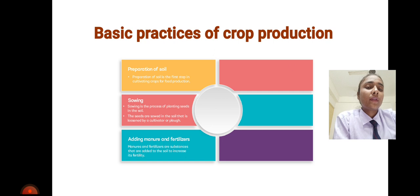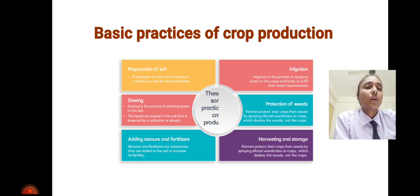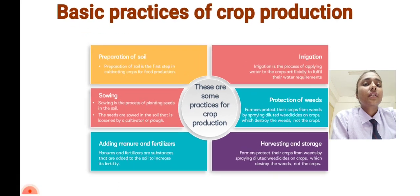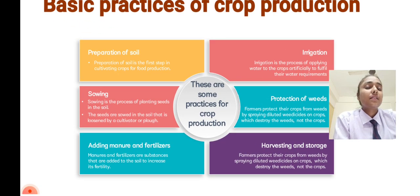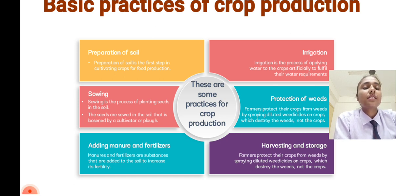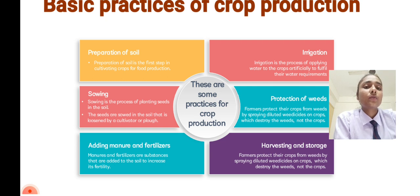Now we will discuss the basic practices of crop production. The first practice is preparation of soil. Since soil is very important for plant production, we prepare the soil first — it is the first step for cultivating crops. The next practice is sowing. After preparing the soil, we sow our seeds or plants by digging the soil using a plow, along with many other devices used for sowing.